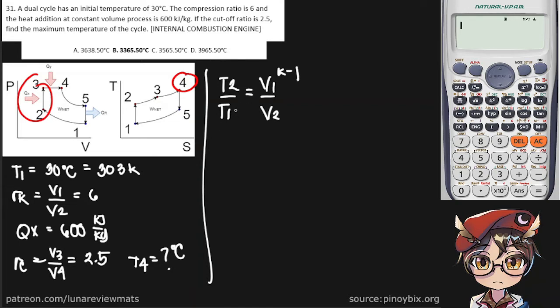So T1 is given to us. V1 over V2 is simply R sub K. And since this is an air standard cycle, K would be equal to 1.4. So now we can get our T2. Let's put that in our calculator.